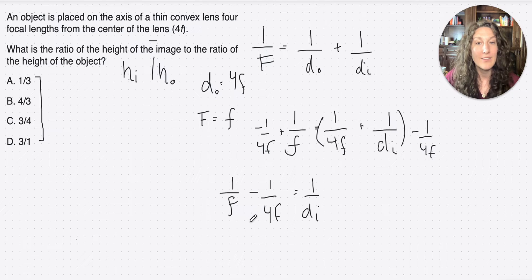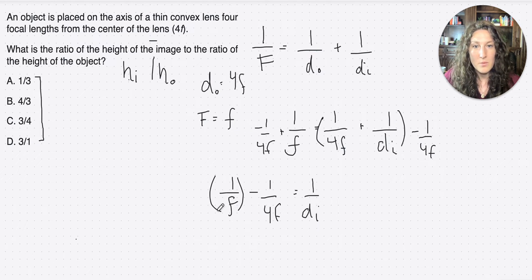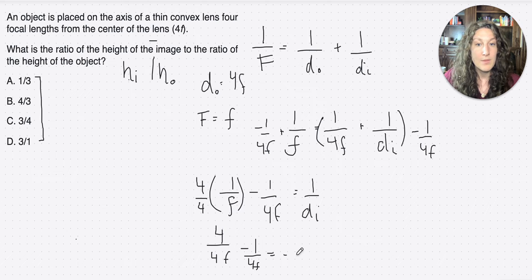If we are subtracting or adding fractions, what do we need? A common denominator. Very good. So how do we get a common denominator? Well, we probably just need a 4 on the denominator, right? So we can multiply this 1 over f times 4 over 4 to get our common denominator. So it's 4 over 4f minus 1 over 4f. All right, and that will equal, now we can just keep the common denominator on the bottom, so 4f. And then we have 4 minus 1 on the numerator, so that's 3.